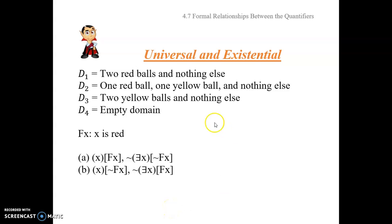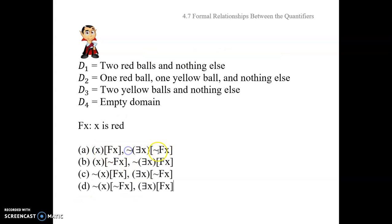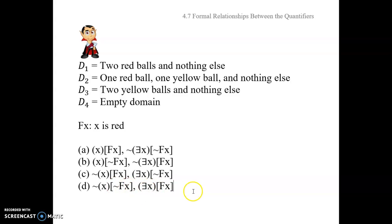We're going to be looking at how the universal quantifier relates to the existential quantifier and vice versa. I've got a couple of domains here — four of them — and a property constant for being red, and then I've got these different pairs of sentences. So here's a sentence in terms of the universal quantifier, and here's another in terms of the existential quantifier, and there's a certain relationship between this pair. Similarly for the other pairs. One's in universal, one's in existential, and there's a relationship between the sentences. We're going to explore what that is, and then I'll present you with the formal idea.